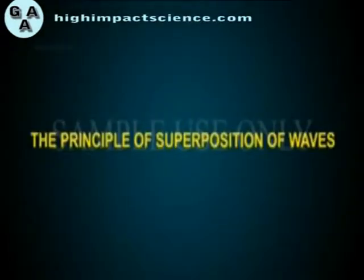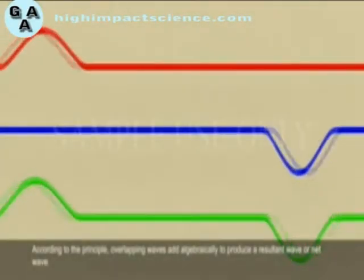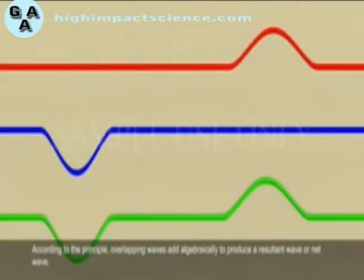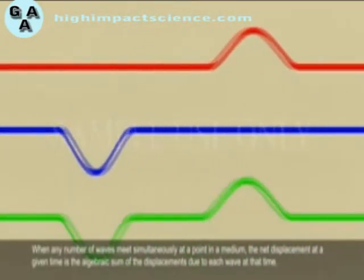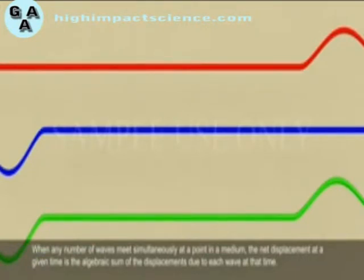And now, interference. Interference occurs when two waves merge. The result can be a much larger wave, a smaller wave, or no wave at all. Interference is an outcome of the principle of superposition. According to the principle, overlapping waves add algebraically to produce a resultant wave. When any number of waves meet simultaneously at a point in a medium, the net displacement at a given time is the algebraic sum of the displacements due to each wave at that time.